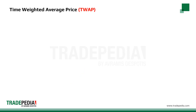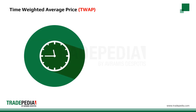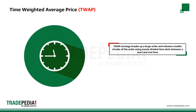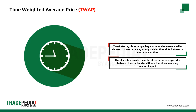The time weighted average price (TWAP) strategy breaks up a large order and releases dynamically determined smaller chunks of the order to the market using evenly divided time slots between a start and end time. The aim is to execute the order close to the average price between the start and end times, thereby minimizing the market impact of instantly executing a large order.